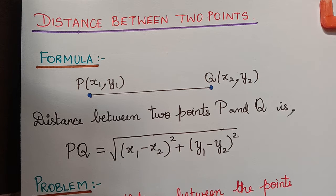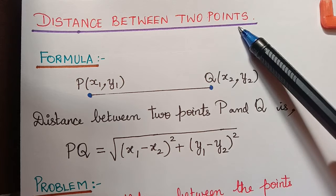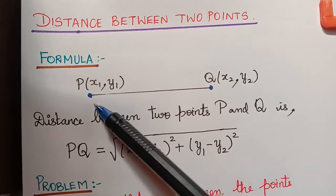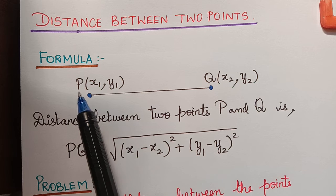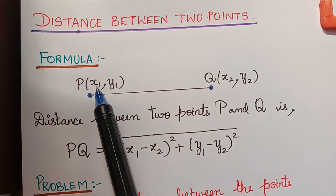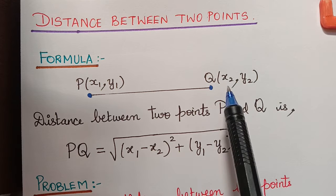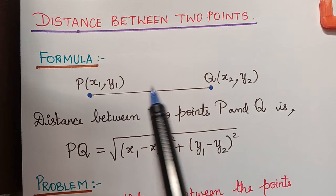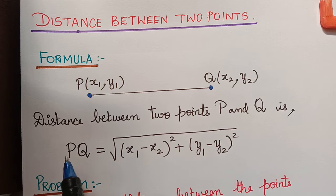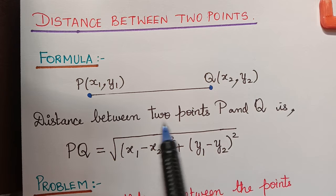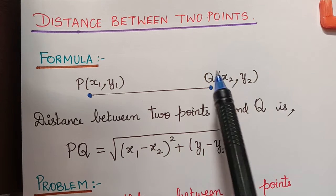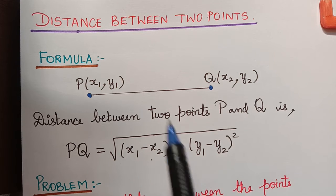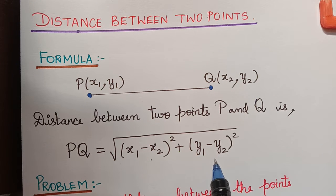Hello students. Under the topic coordinate geometry, the first formula we are going to learn is to find the distance between two points. So if you have two points P and Q, where the coordinates of point P are given by x1 comma y1 and the coordinates of point Q are given by x2 comma y2, the distance between these two points is given by the formula: PQ equals square root of (x1 minus x2) whole squared plus (y1 minus y2) whole squared.